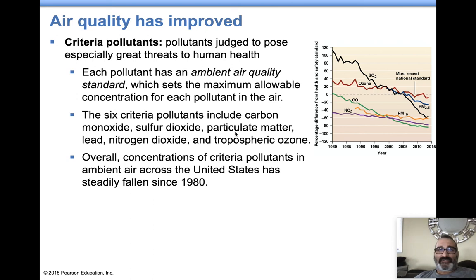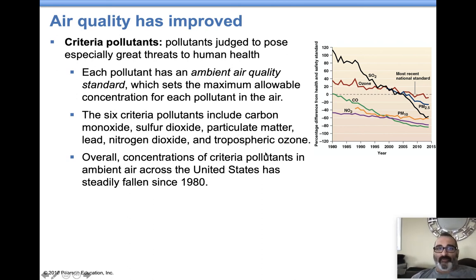The six criteria pollutants monitored by the EPA are: carbon monoxide, sulfur dioxide, particulate matter, lead, nitrogen oxides, and tropospheric ozone — which is ozone at the ground level.